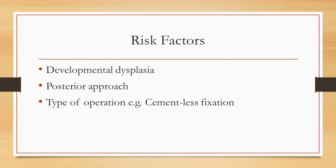Some people are at higher risk due to certain risk factors. Congenital malformation of the hip — developmental dysplasia — is a known risk factor. The posterior surgical approach is a risk factor for the sciatic nerve, while the anterior approach puts the femoral nerve in the line of fire instead. The type of operation also matters: for example, cementless fixation is a larger operation in terms of forces used, and therefore places the sciatic nerve at greater risk.